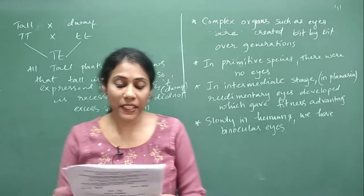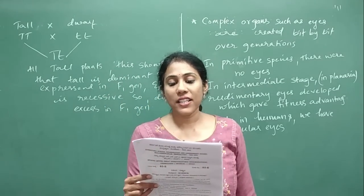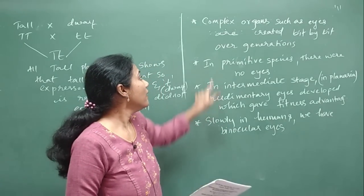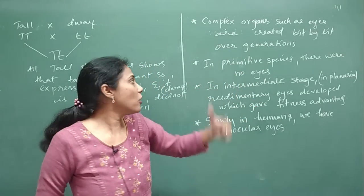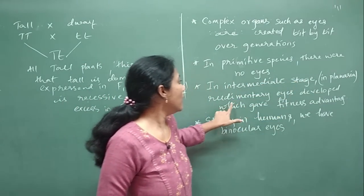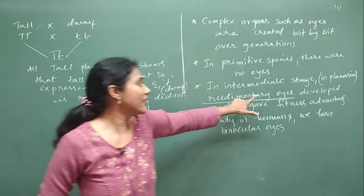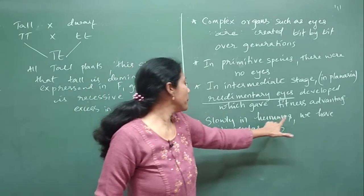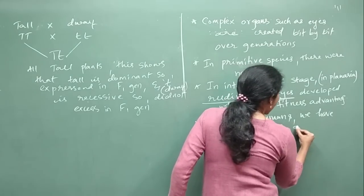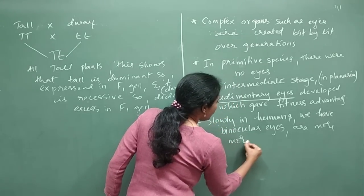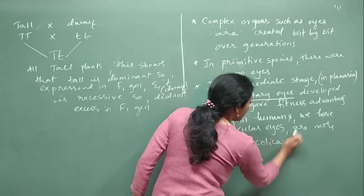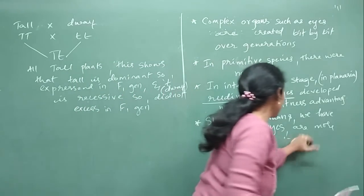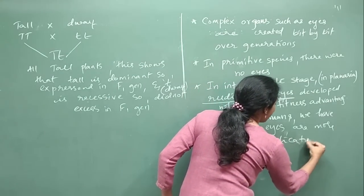Sub-question B: give an illustration to prove that complex organs such as eyes evolved in stages. Complex organs like eyes are created bit by bit over generations. In primitive species there were no eyes. In intermediate stages, as in planaria, two eye spots (rudimentary eyes) developed, which gave a fitness advantage. Gradually, in humans, we developed binocular eyes — more complex eyes that allow us to see clearly.